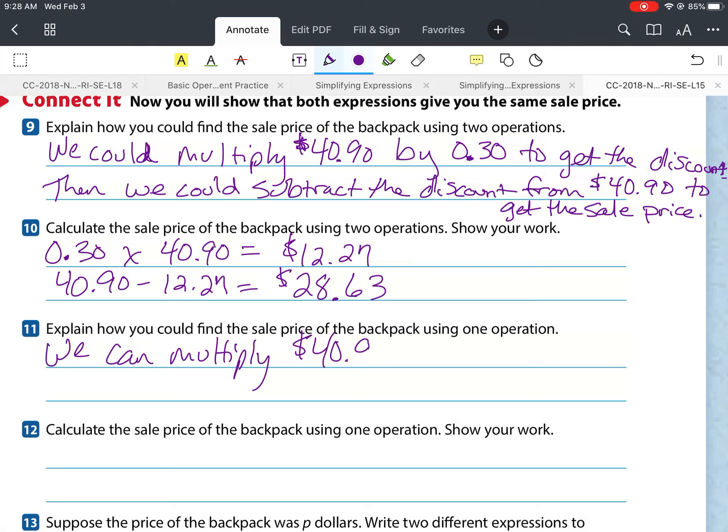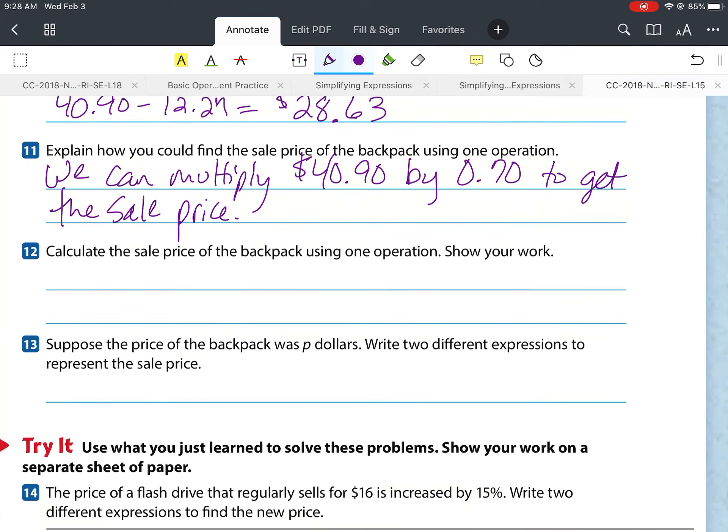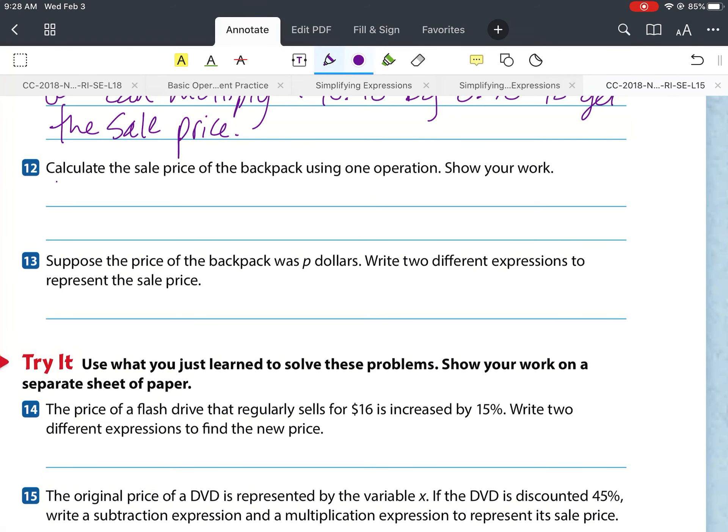Number 11, it says, explain how you could find the sale price of the backpack using only one operation. Well, we could multiply $40.90 by the 70% to get the sale price. Number 12, it actually wants us to calculate it, which we've already done. Again, $40.90 times that by the 70%. When we multiply those together, we get the $28.63.